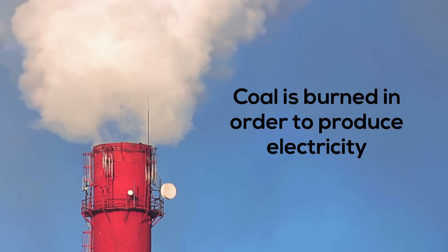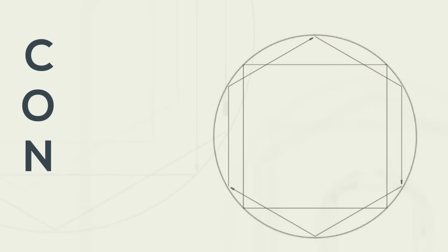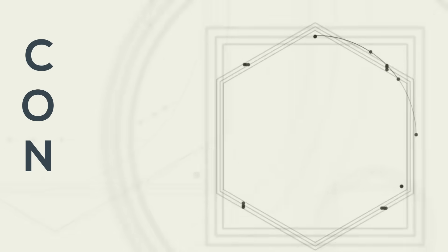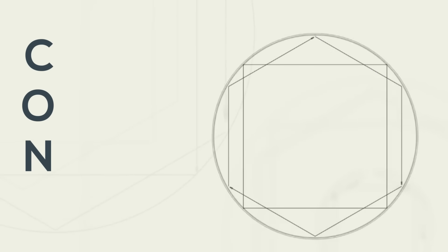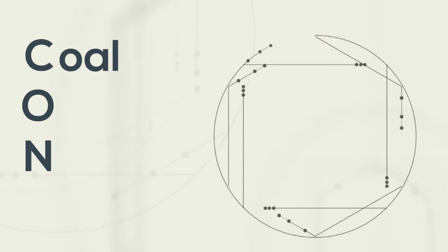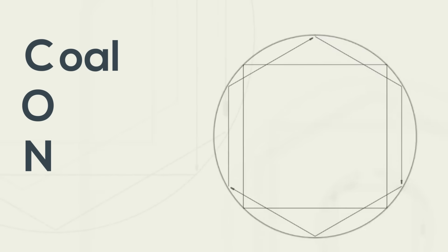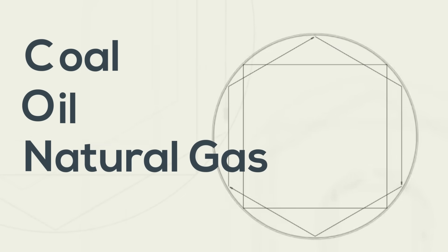You can use the phrase CON to remember three popular non-renewable resources. This stands for coal, oil, and natural gas.